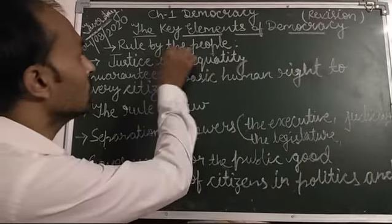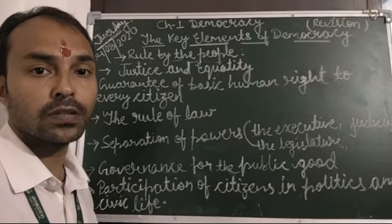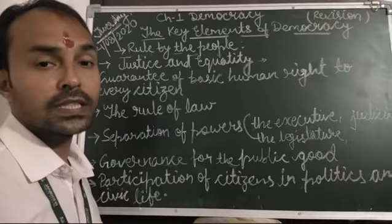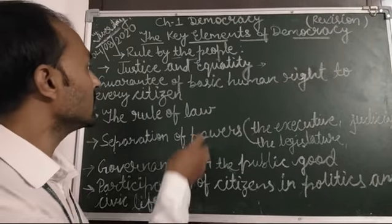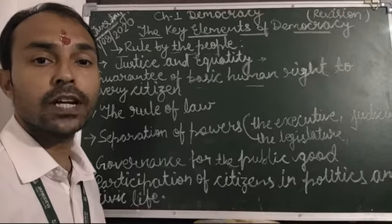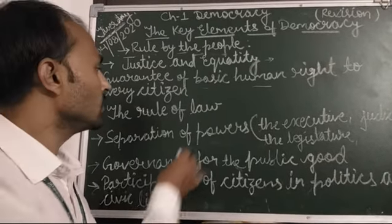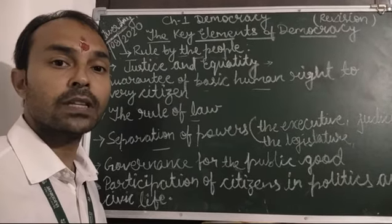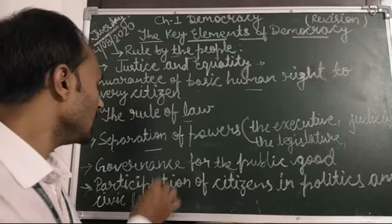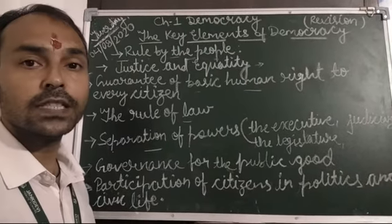The first feature is rule by the people, as the people elect their representatives and have the ultimate power to choose or displace their existing representatives. Then there is justice and equality, which are two main pillars of a democracy. Third is the guarantee of basic fundamental rights or human rights to every citizen. Then the rule of law, separation of powers among the three organs of government — the executive, the legislature, and the judiciary — followed by governance for the public good, and the participation of citizens in politics and civic life.